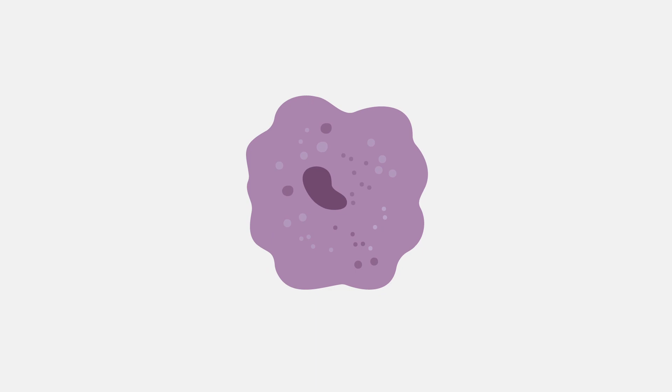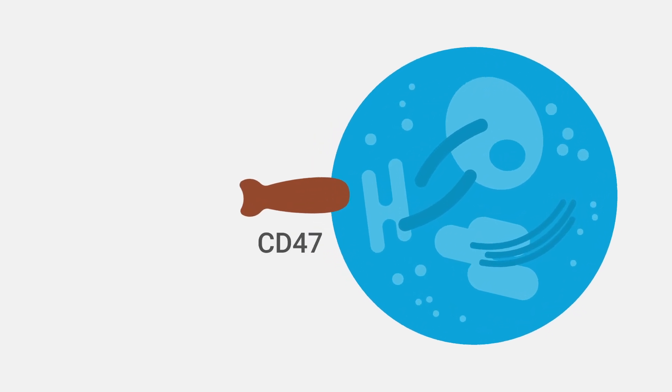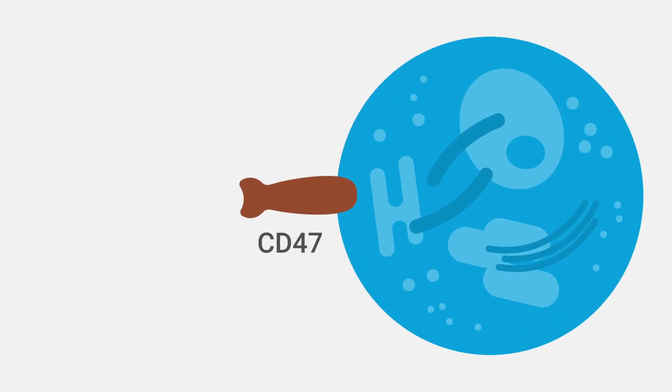In recent years, the immune checkpoint formed by Signal Regulatory Protein Alpha, or SIRPα, and its ligand CD47, has emerged as a hot therapeutic target for macrophage biology.